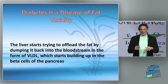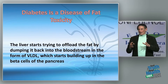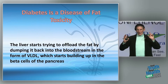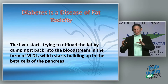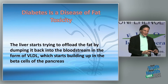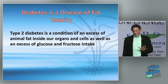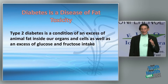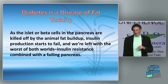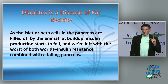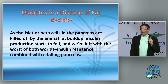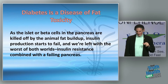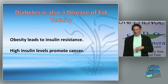Fat also begins to build up in the pancreas due to excess animal fat. It accumulates in the muscles and liver, and then very low-density lipoproteins get pushed out of the liver and accumulate in the beta cells of the pancreas. You can actually think of type 2 diabetes as an excess of animal fat in your organs and cells. Fish fat in particular is the most toxic to beta cells.